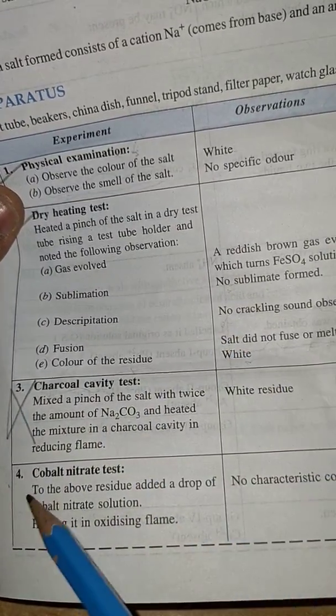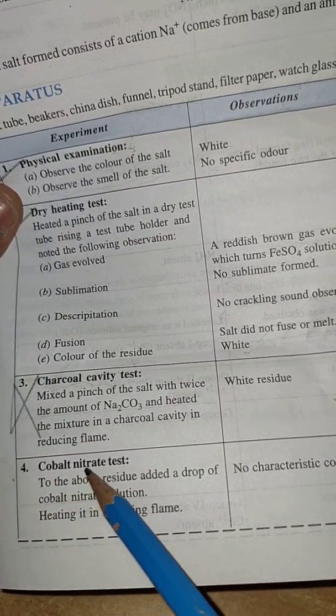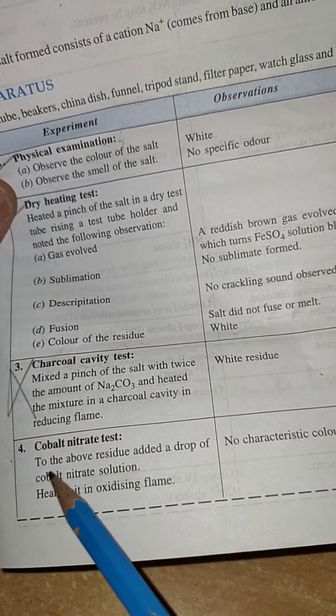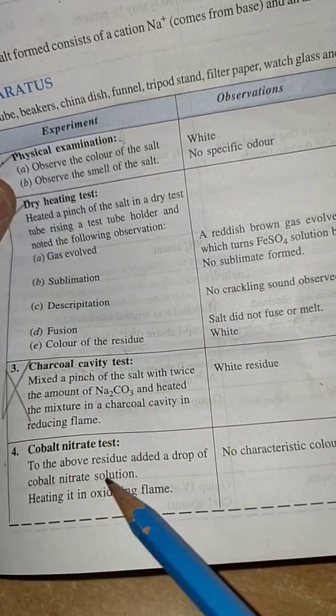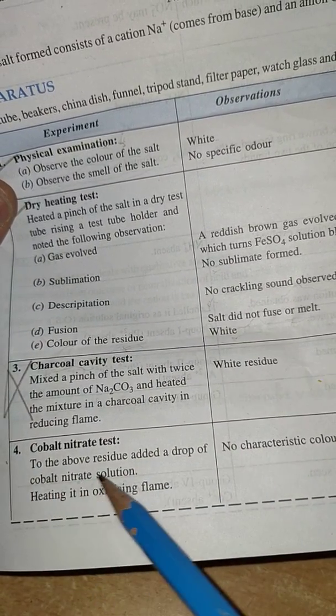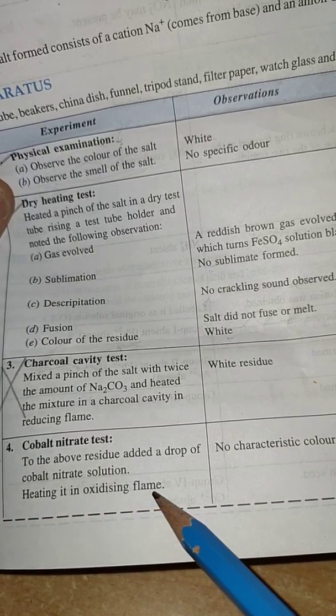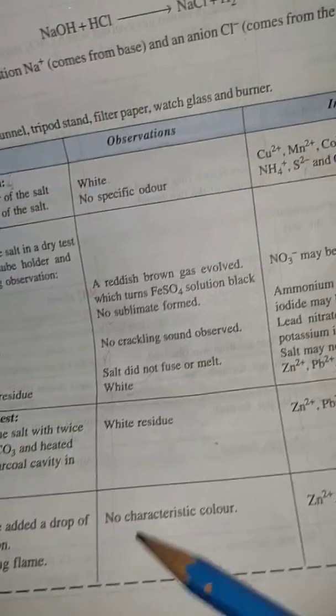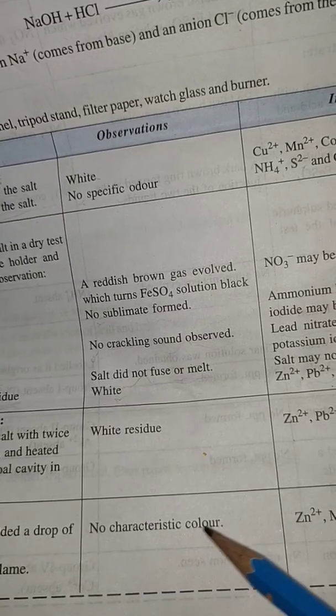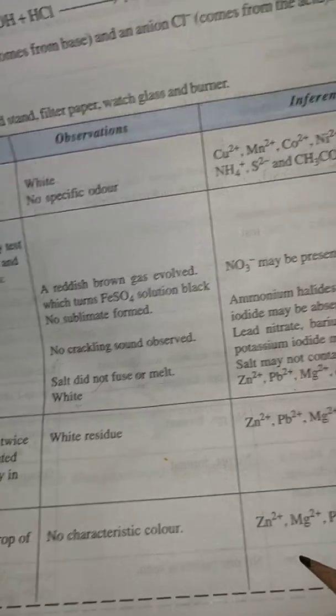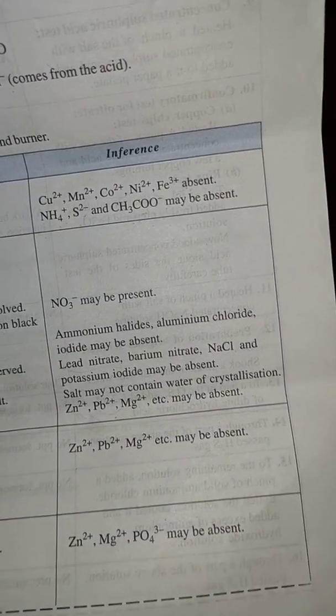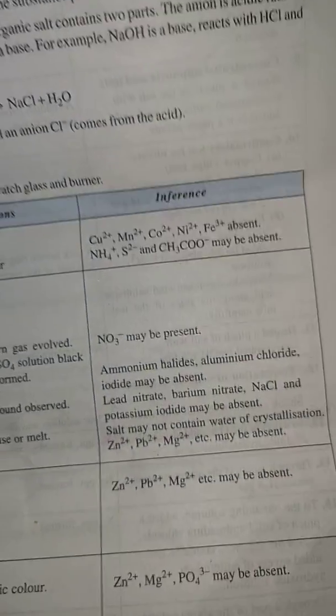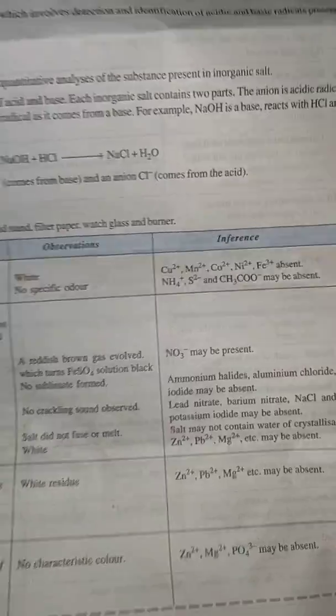Now come to the cobalt nitrate test: to the above residue add a drop of cobalt nitrate solution and heat it in oxidizing flame. No characteristic color, so zinc, magnesium, or PO4³⁻ may be absent.